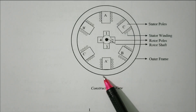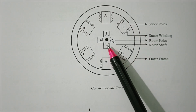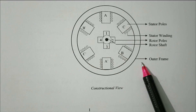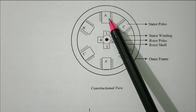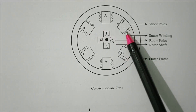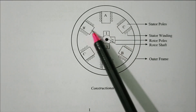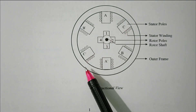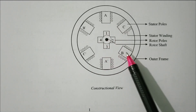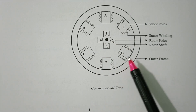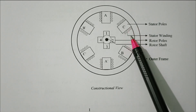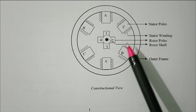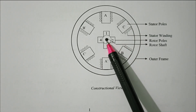The stator is the stationary part and the rotor is the rotating part. This is the outer frame; in this outer frame the stator windings and poles are placed. We have three-phase windings: A, B, C, and also A-dash, B-dash, C-dash. A and A-dash form one phase, B and B-dash another phase, C and C-dash the third phase — each pair connected in series. The small circles in the diagram represent the stator windings placed around the stator poles.